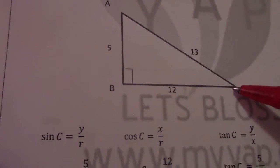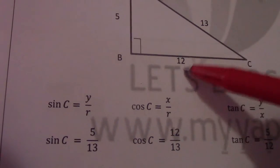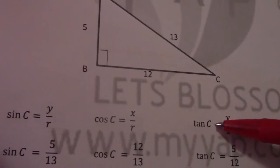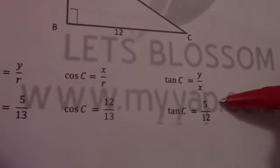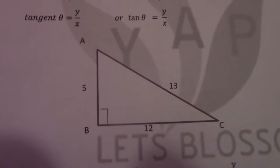Cos C would be adjacent over hypotenuse, or X over R, so that is 12 over 13. Tan C is Y over X, so my Y value is 5 and my X value is 12. So they have defined the trig ratios according to triangle ABC.